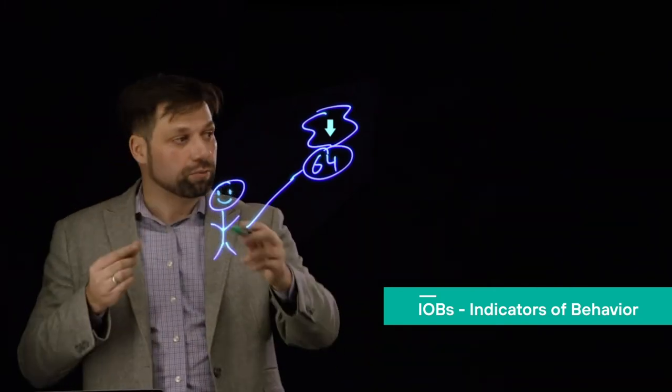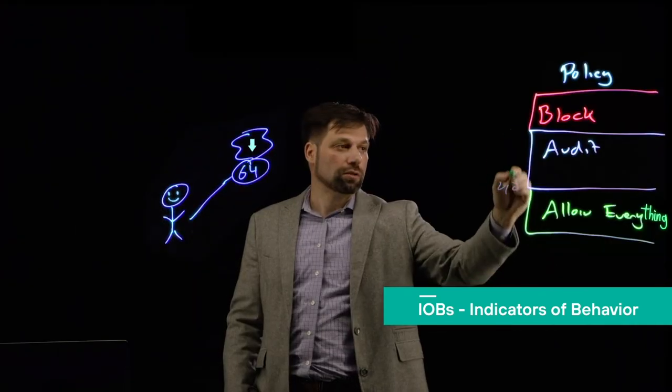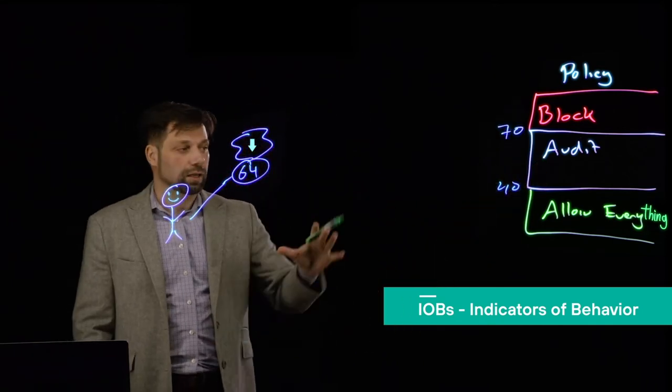Now why does a 64 matter? Well, maybe your policy is anything that's between 40 and 70 is an audit, a forensics copy, and everything else is allowed.